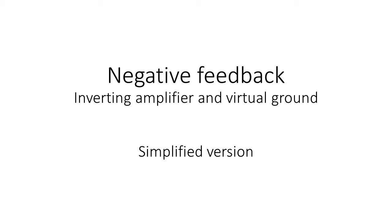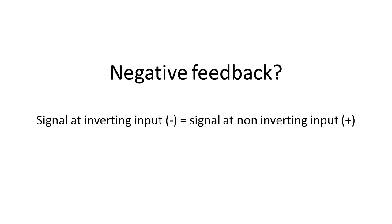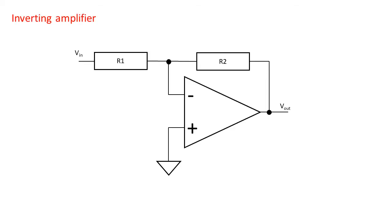In the last video we looked at the non-inverting topology, now we are looking at the inverting amplifier topology. Also here negative feedback is used, so the op amp will try to keep its input at the same voltage. In this case the non-inverting input is grounded or zero volts. This means that in turn the inverting input is at zero volts too. This is called the virtual ground.